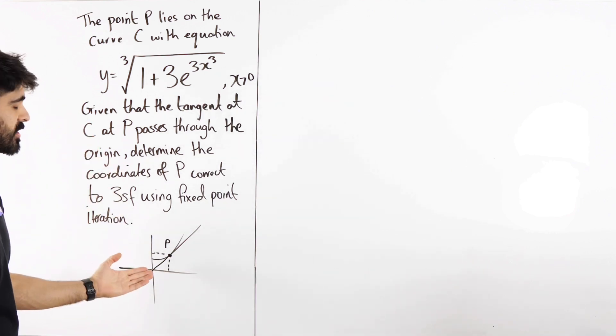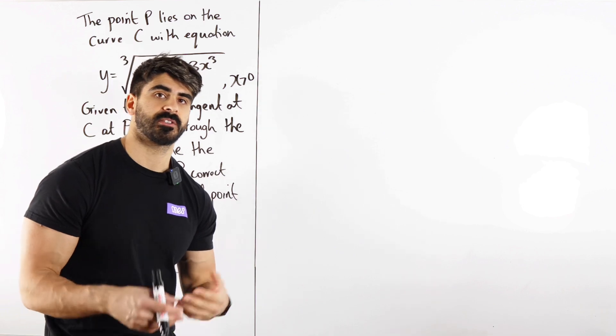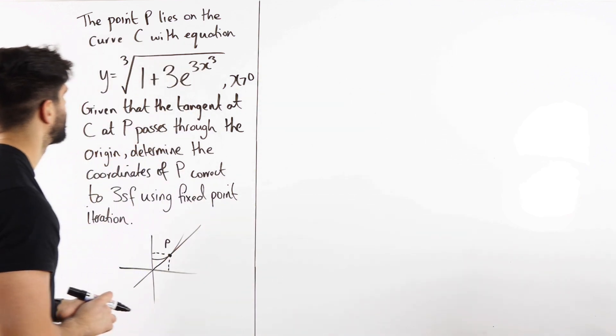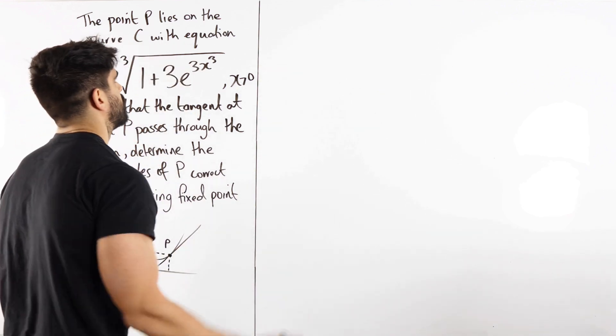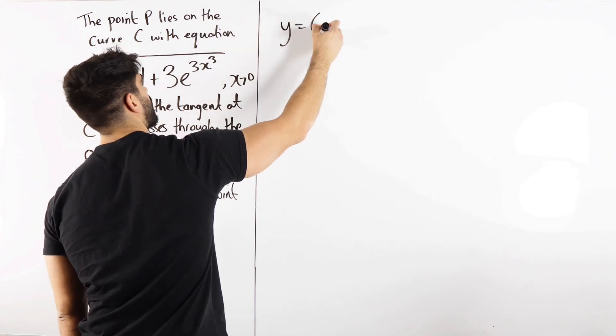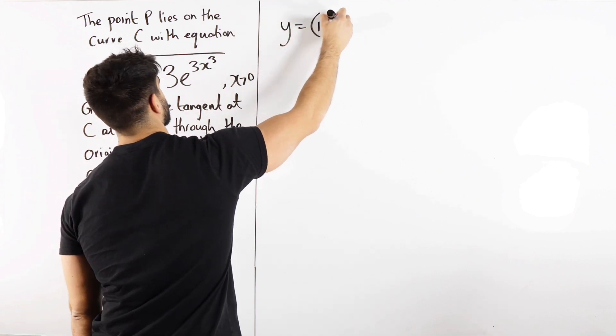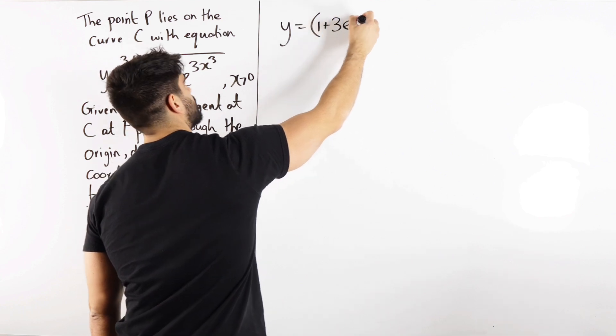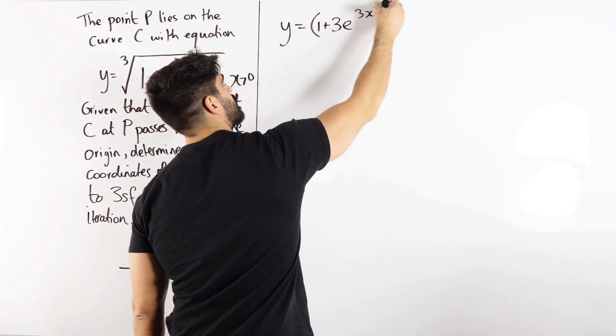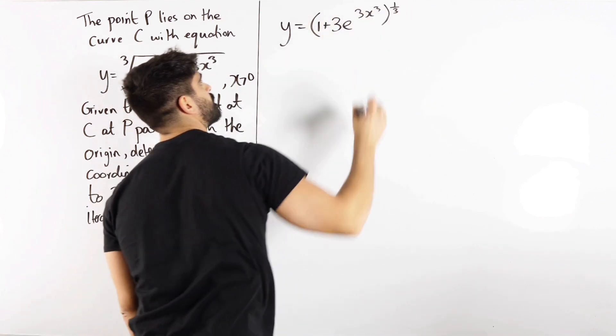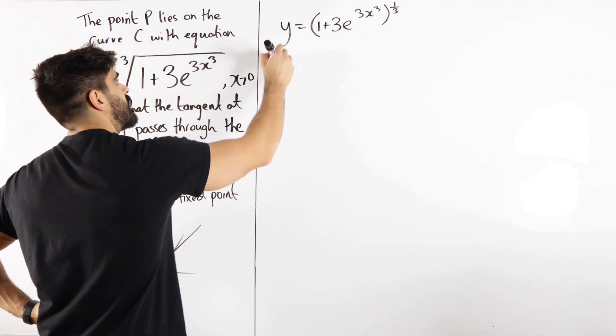So it makes sense then to work out what the equation of the tangent is and fix the situation that it has to go through the origin. Well, if it mentions tangent, the first thing we should be doing is to find the gradient. So we're going to differentiate this. So we have y is, now we're going to rewrite it, 1 plus 3e to 3x cubed to the power of 1 third.